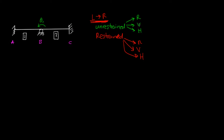Then we move on to vertical unrestrained degrees of freedom. All three supports support a vertical reaction, so all three vertical degrees of freedom are restrained. We've covered rotational, vertical, and horizontal. In most cases, in a basic structural fundamentals course, we don't deal with horizontal degrees of freedom, so I'm going to skip those.